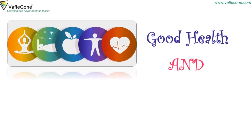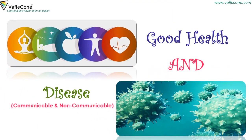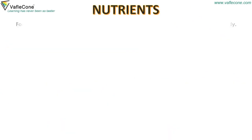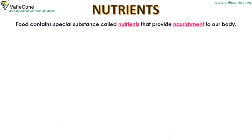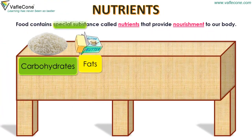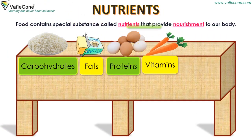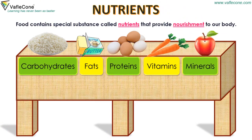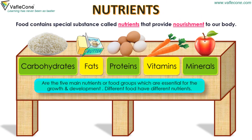Good health and disease, Part 1: Nutrients. Food contains special substances called nutrients that provide nourishment to our body. Carbohydrates, fats, proteins, vitamins, and minerals are the five main nutrients or food groups which are essential for growth and development. Different foods have different nutrients.